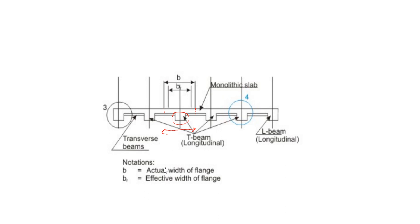For design purposes, we assume another width less than the actual width of the flange, denoted bf — the effective width of the flange. The actual width b represents how much influence the beam has, taking load from the center line of adjacent bays on each side. We will now discuss the effective width of the flange in more detail.